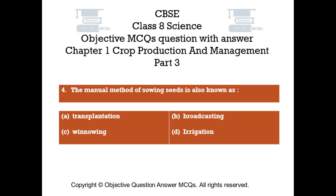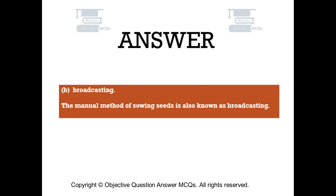Question number 4. The manual method of sowing seeds is also known as. Option A: Transplantation. Option B: Broadcasting. Option C: Winnowing. Option D: Irrigation. The right answer is option B — Broadcasting. The manual method of sowing seeds is also known as broadcasting.